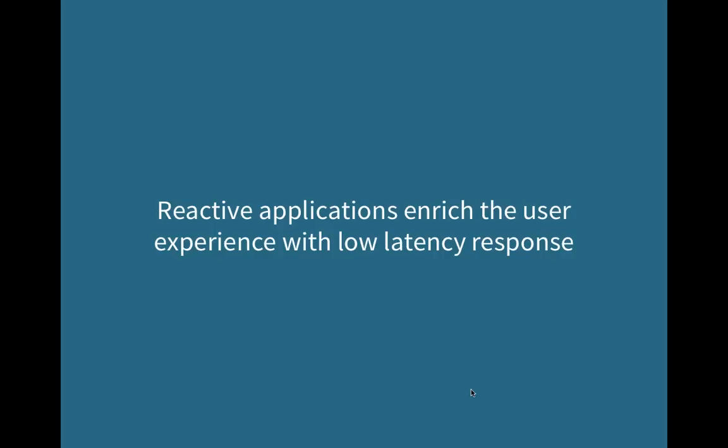Netflix went beyond Chaos Monkey: they have Chaos Gorilla, which takes down an availability zone — virtual to their users but a really big deal. Then there's Chaos Kong, which takes down an entire Amazon region for themselves, checking that user experience remains uninterrupted. So if you're watching Netflix, think of all the things running in their platform constantly testing whether they can withstand failure. It's a great way to think about how your business will deal with failure.